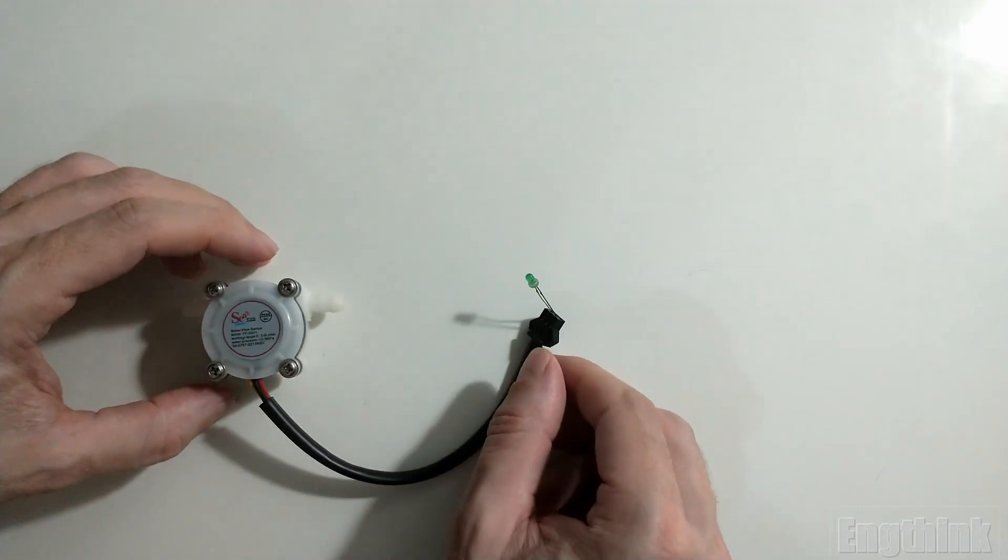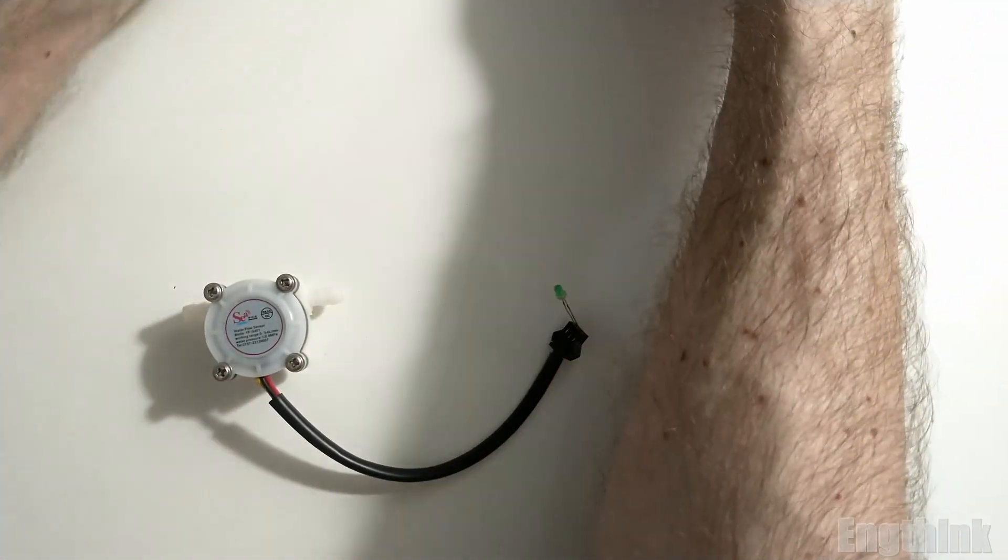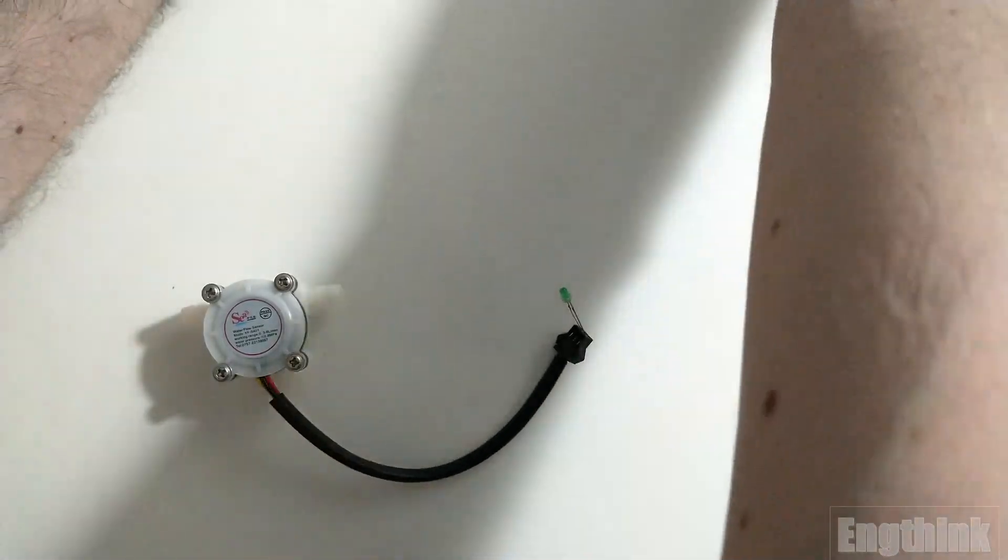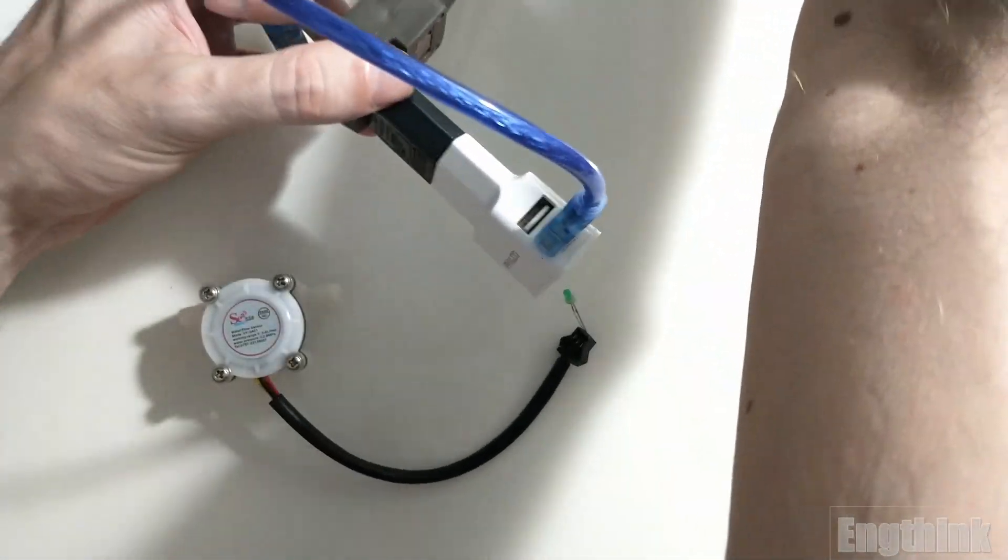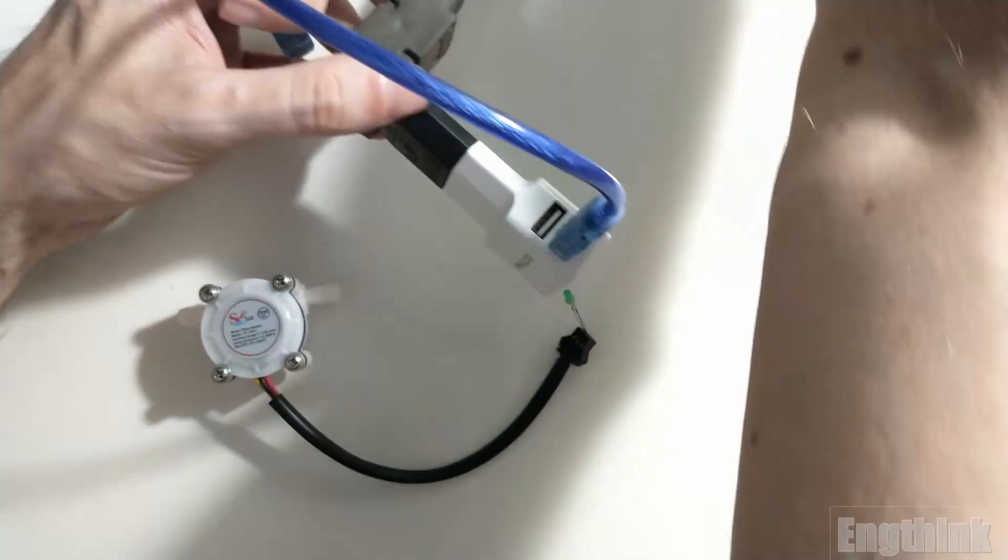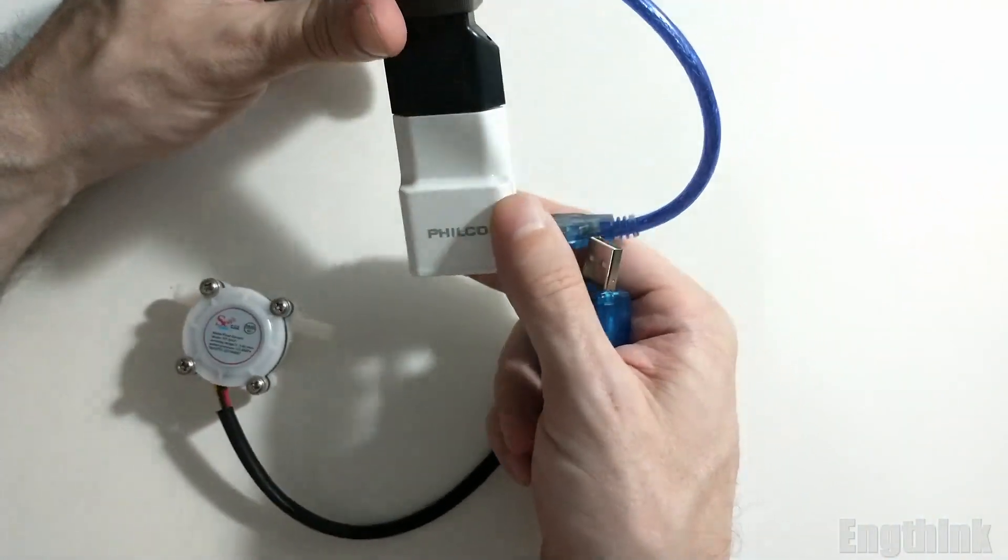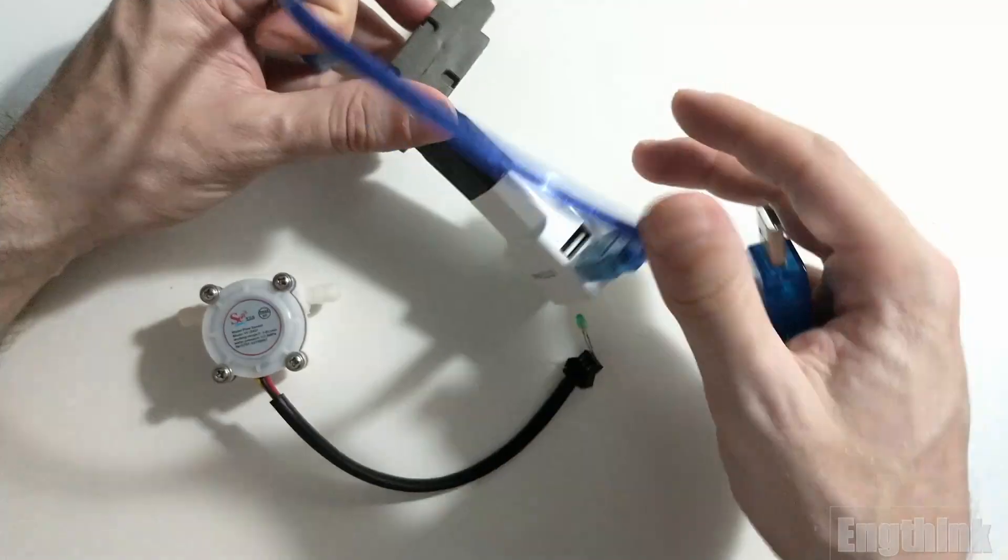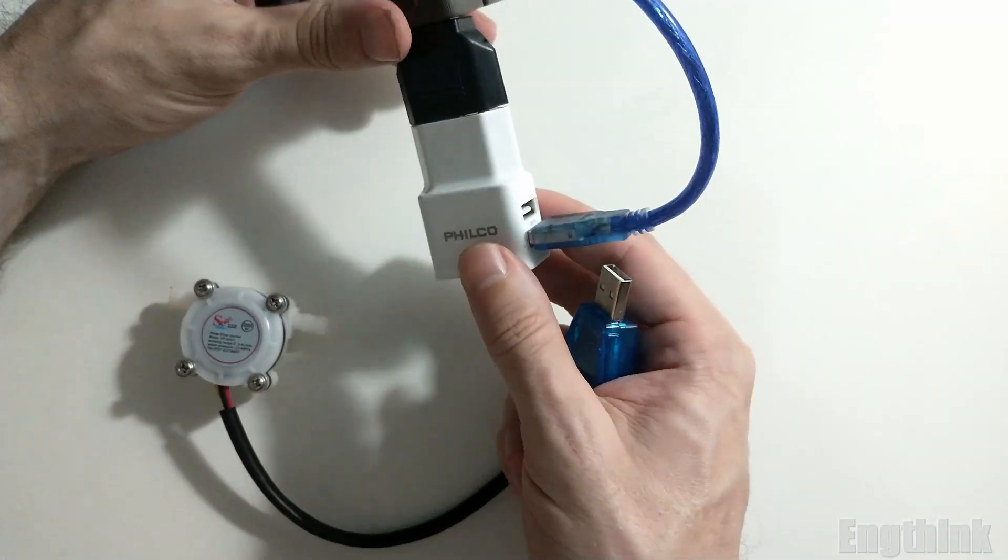In addition to the LED signalization, it's also necessary to have a power supply to energize the flow sensor. I will use this AC/DC adapter and we're also going to use a DC/DC converter that can be adjusted according to our needs.